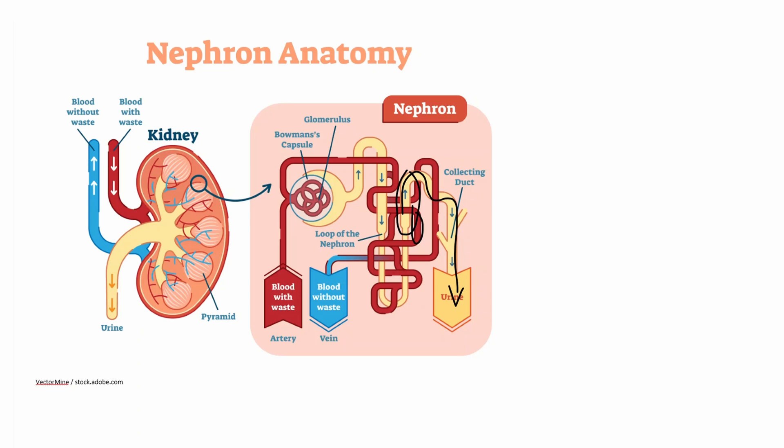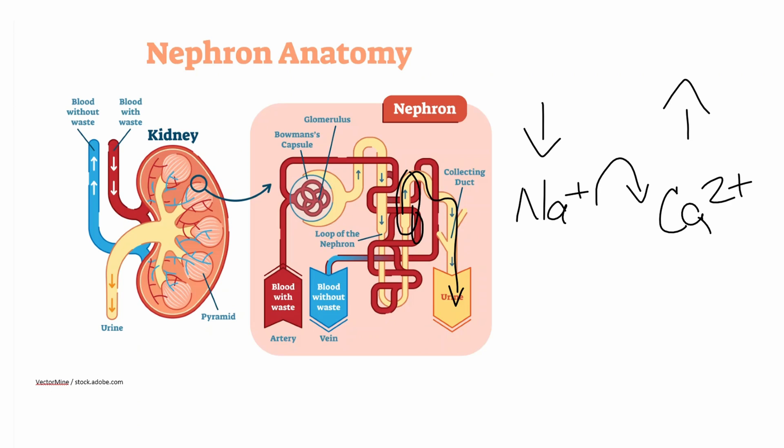Another interesting thing that happens here is that sodium is also traded for calcium (Ca2+). Forgive my penmanship — I'm drawing with my finger on my laptop. So sodium is going to be pulled out of the blood and traded for calcium. With thiazide diuretics, you will have more calcium retention in the body — more calcium is pulled out of the urine and reabsorbed into the blood, while sodium is pulled out of the blood and put into the urine. So ultimately, calcium in the body goes up and sodium goes down.